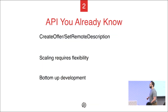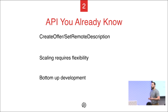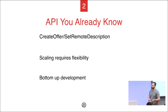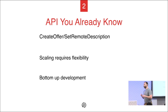If I've convinced you to try it out, it's an API you already know. You just call create offer, set remote description, and you're off to the races. One thing you will notice is it's more of a bottom-up development — it's not a kitchen sink. If you want to do an SFU, it doesn't provide an encoder out of the gate. We have samples showing how to use GStreamer, FFmpeg, libvpx, or whatever you want. We encourage you to plug in anything and find the best solution rather than tying you to one encoder.